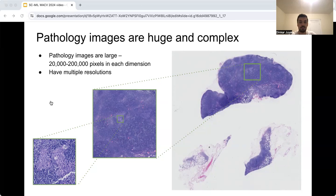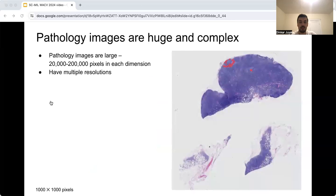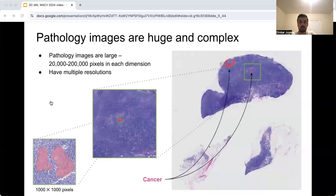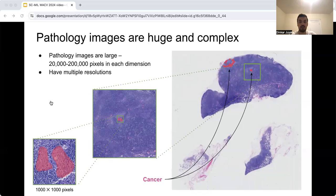In addition to that, exhaustive labeling of these images is prohibited as they require expert annotations and are time consuming. In this case, the annotated region is much smaller relative to the size of the image. Finding regions of interest within these WSIs can sometimes be like looking for a needle in a haystack.